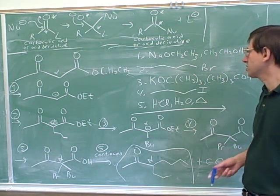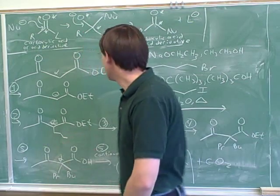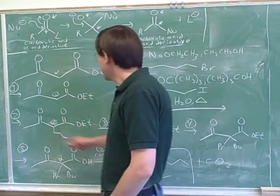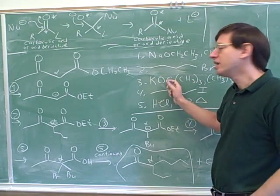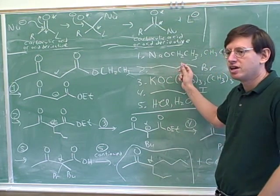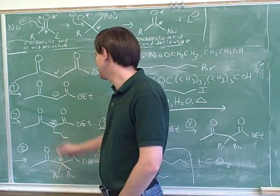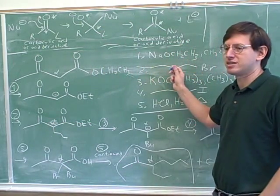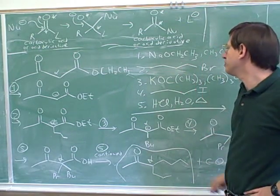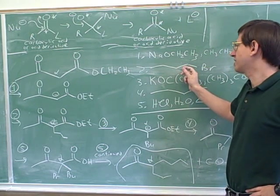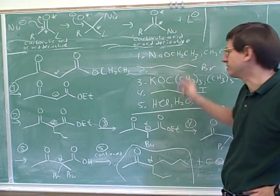Going back to the earlier question about how many equivalents of the alkyl bromide we needed — you were probably asking whether it would attack once or twice. After the first attack, this isn't an enolate anymore, and it won't become an enolate until step three when we add more base. So presumably you would only add one equivalent. Even with excess alkyl bromide, you'd still only get one attack. It's best to use only one equivalent so none is left over to compete in succeeding reactions.